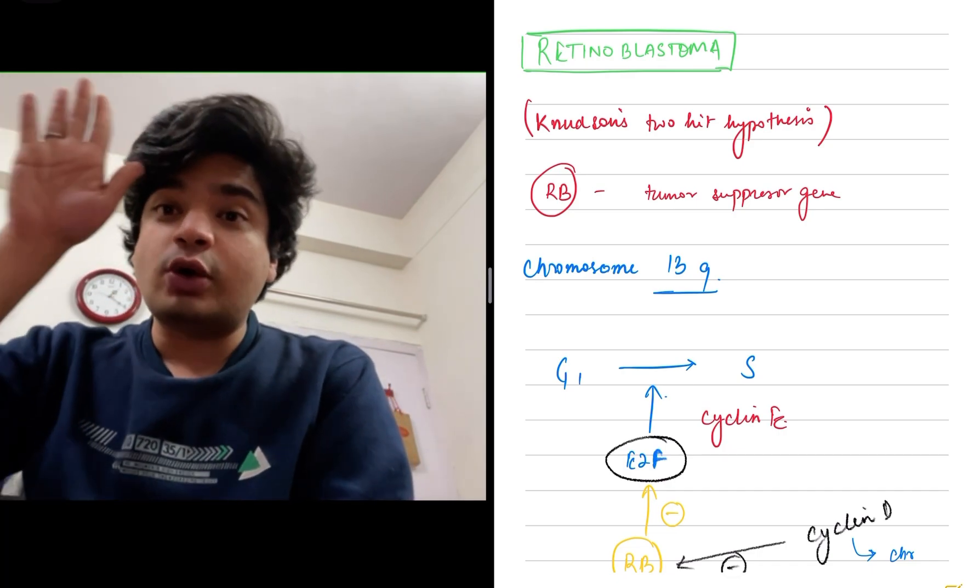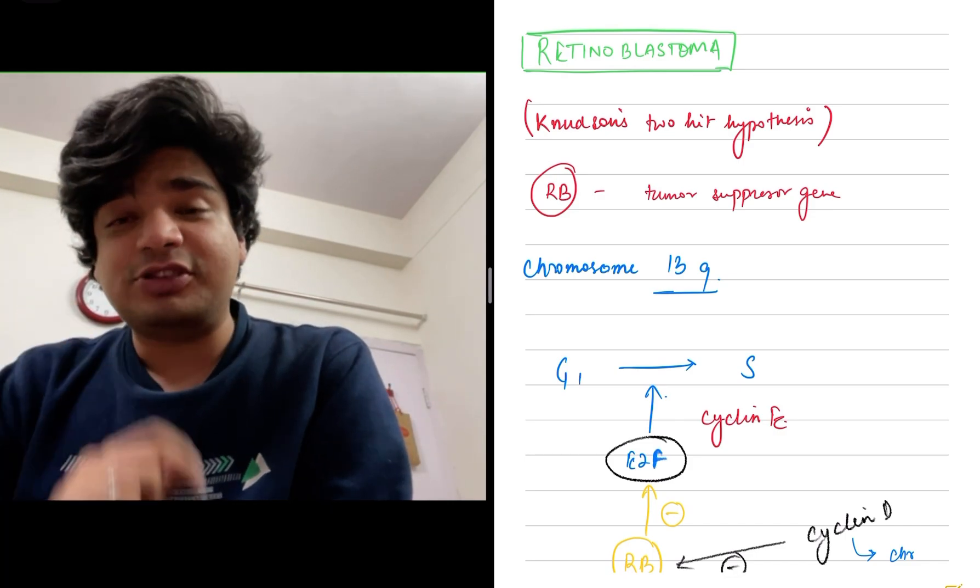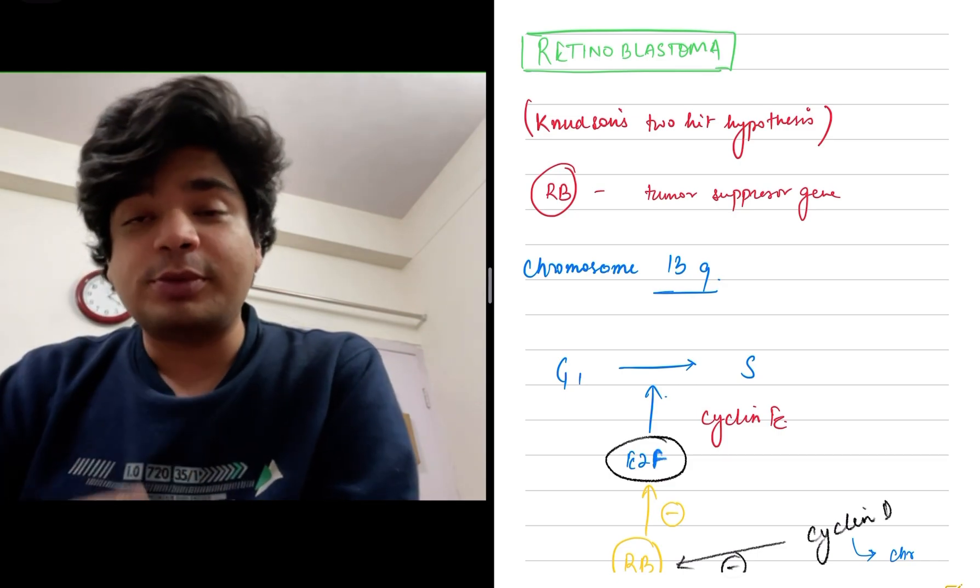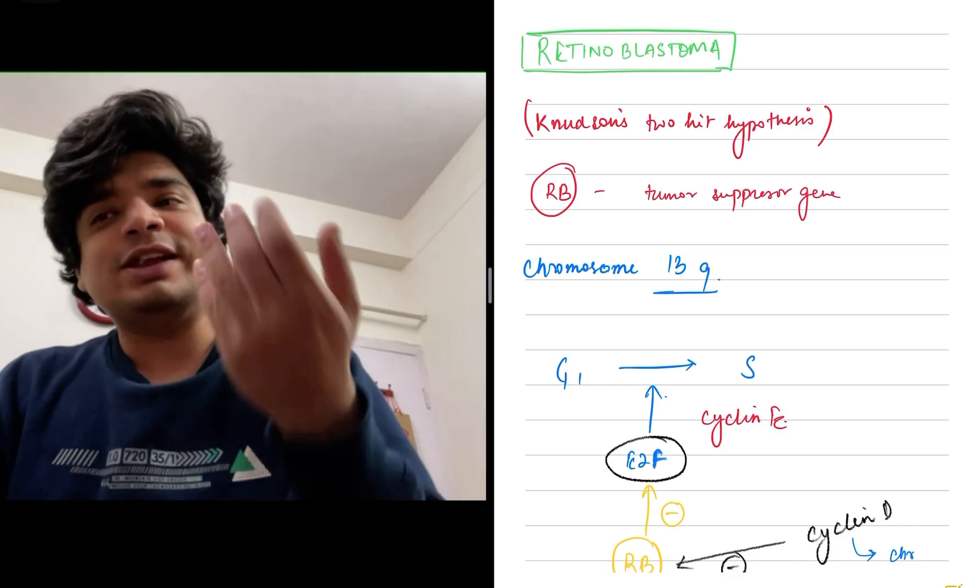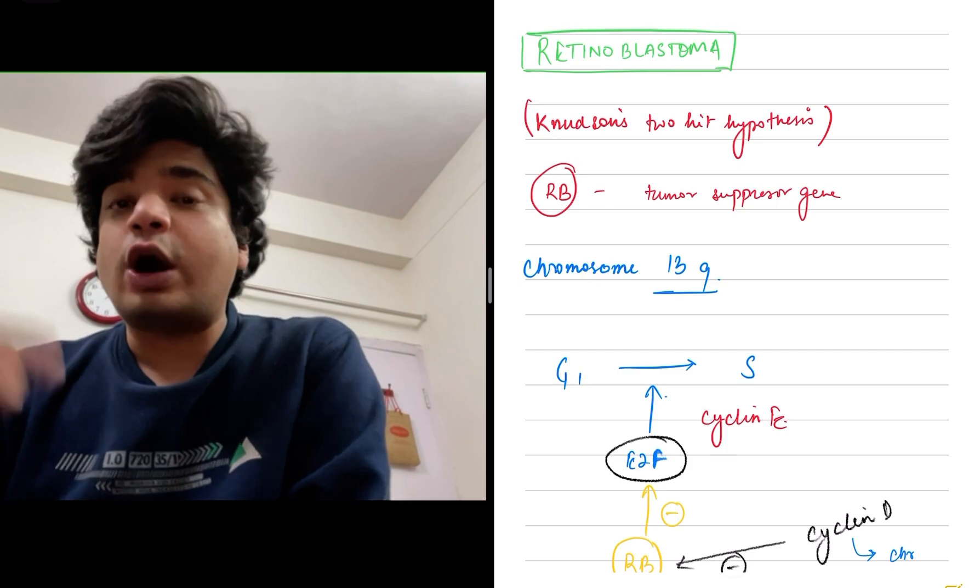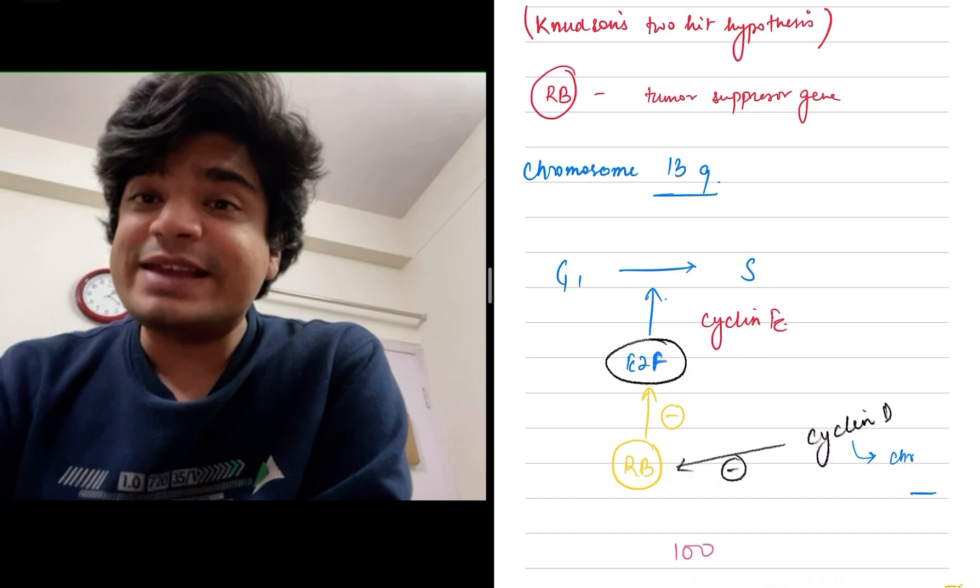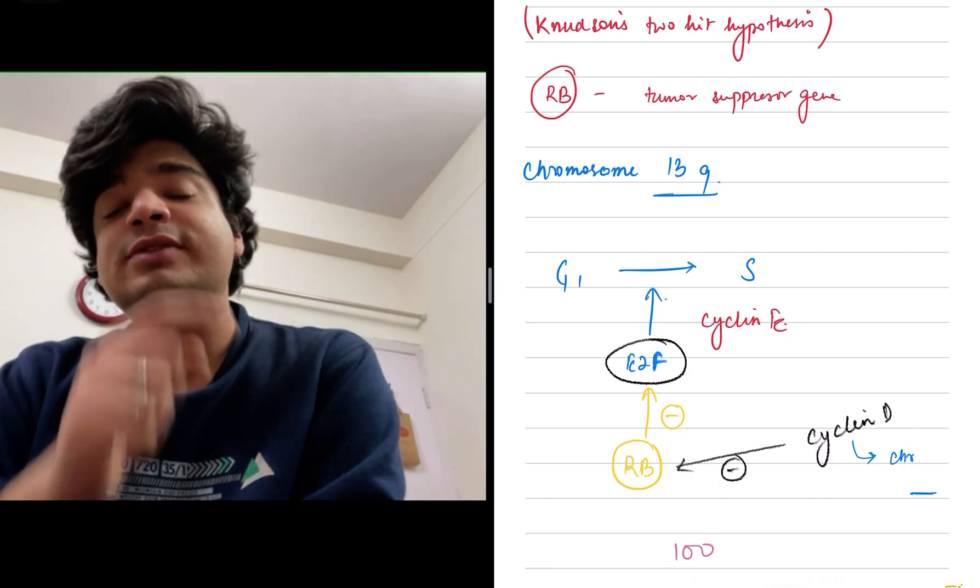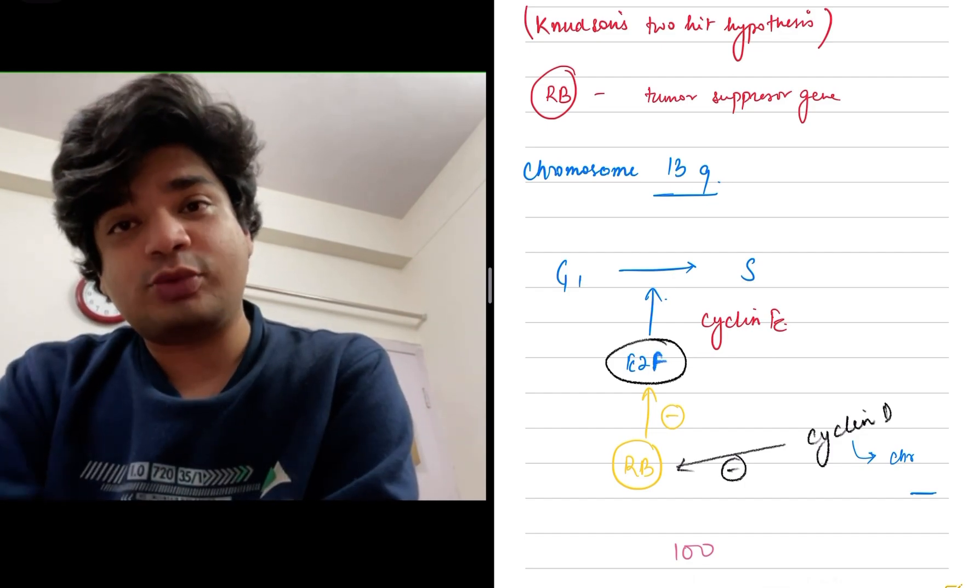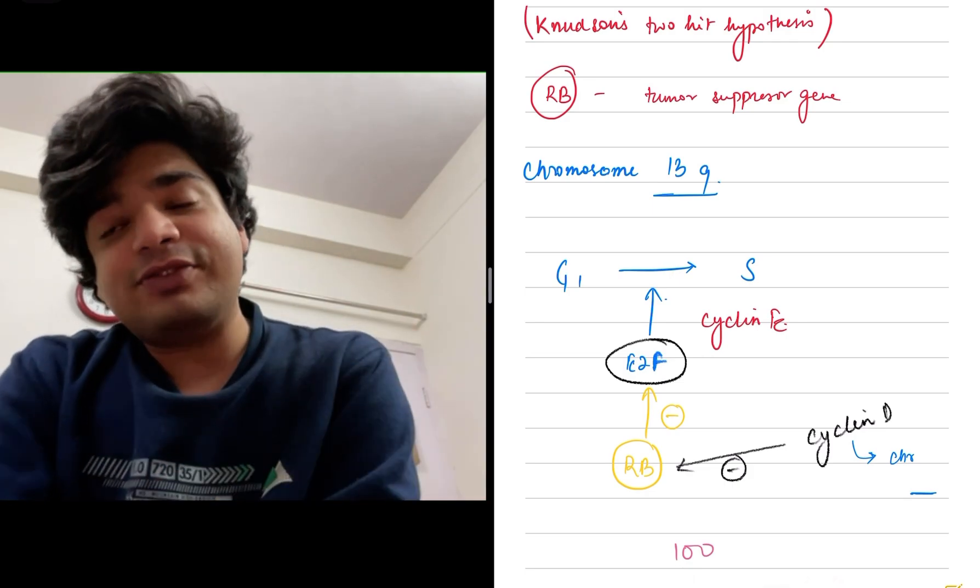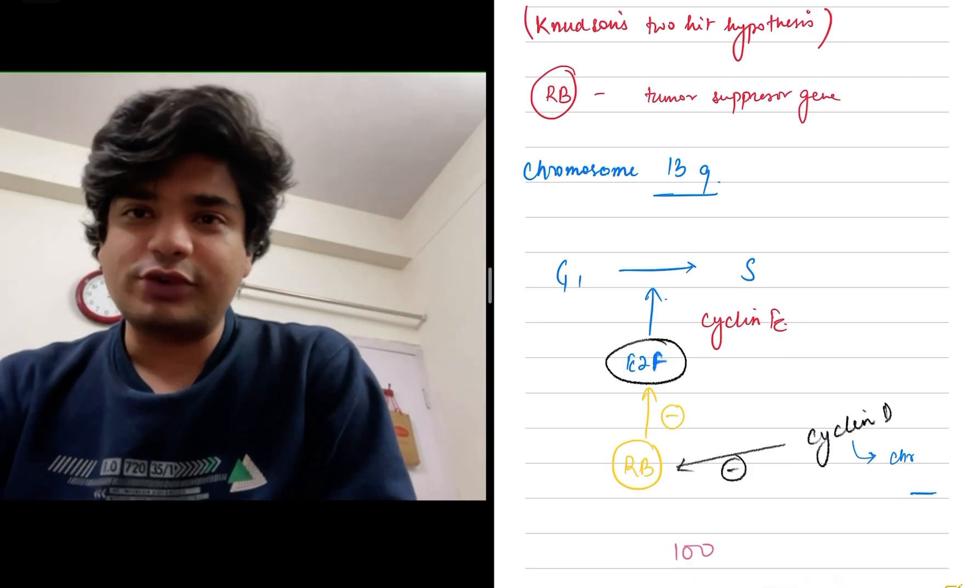A tumor suppressor gene will cause the cell cycle to get suppressed, and this is where the RB gene comes into picture. The RB gene results in formation of an RB protein. This RB protein engulfs E2F. If it engulfs E2F, the G1 to S transition won't occur. When the cell cycle transition has to occur despite RB being present, cyclin D acts. Cyclin D will inhibit RB by causing phosphorylation of RB, preventing it from making a complex with E2F. E2F will be released and cause the G1 to S transition.